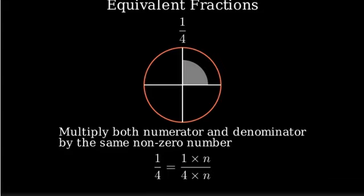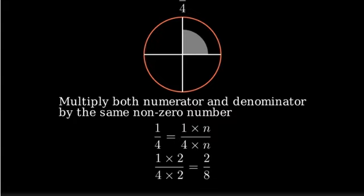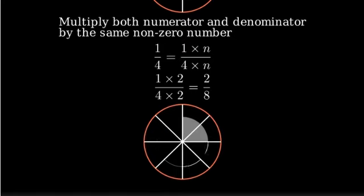Let's try multiplying by two. One times two over four times two gives us two-eighths. We can see that two-eighths represents the same amount as one-fourth, just divided into smaller pieces.